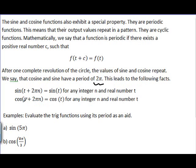The same thing is true for cosine. Cosine of t plus 2πn is cosine t for any integer n and real number t. So here's some examples that we want to illustrate this with. We want to find the sine of 5π, and we want to use the period.